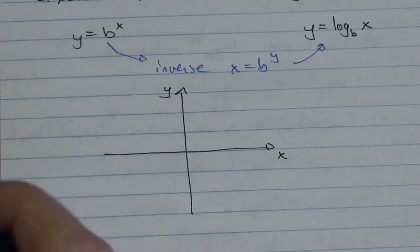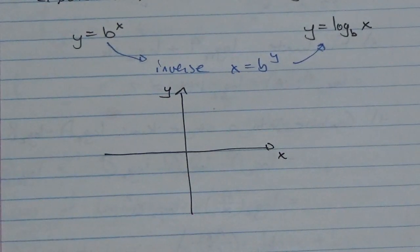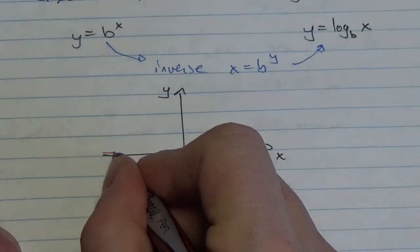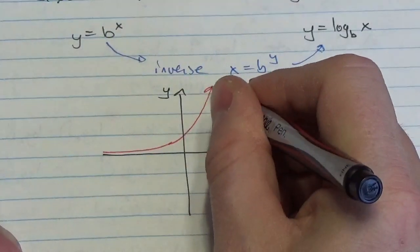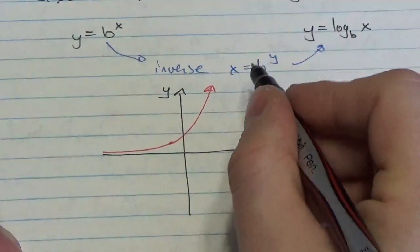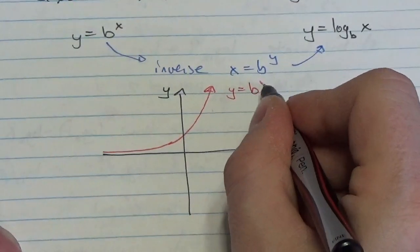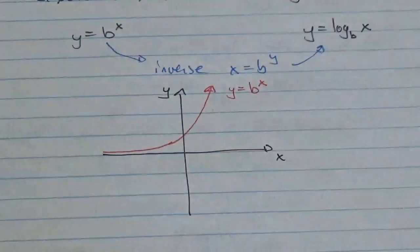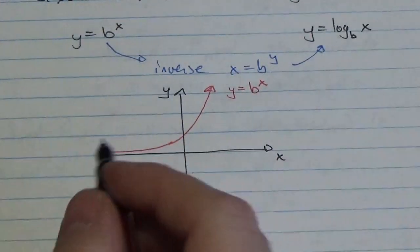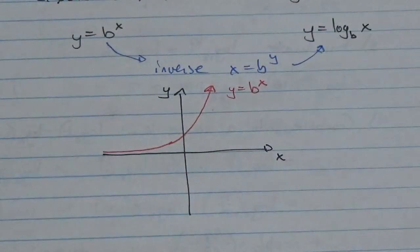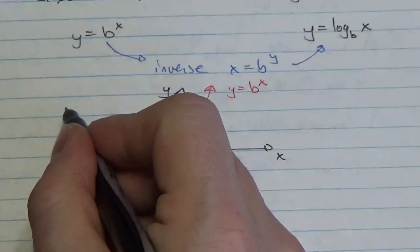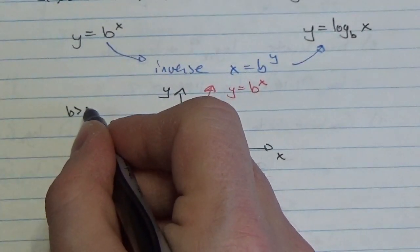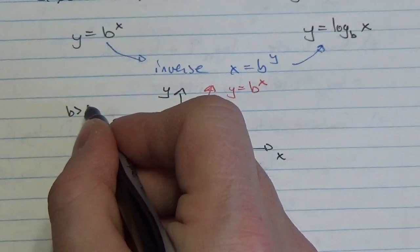So my exponential function here will be in red, going up like that. This is going to be y is equal to b to the x. I'm assuming that b in this case is going to be some number bigger than 1.